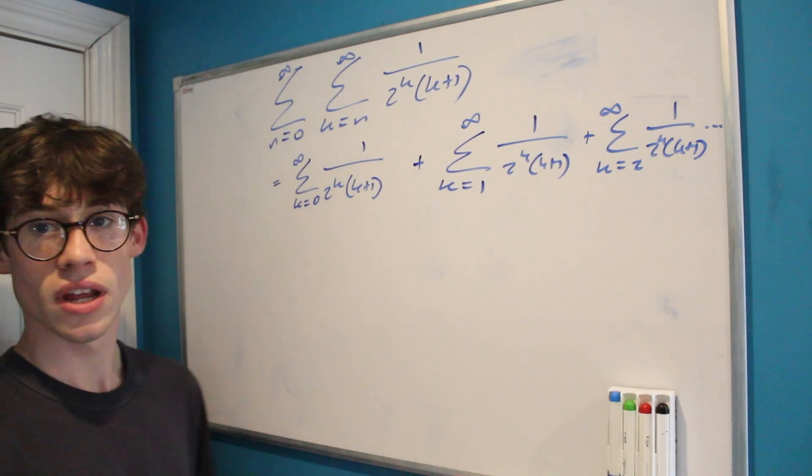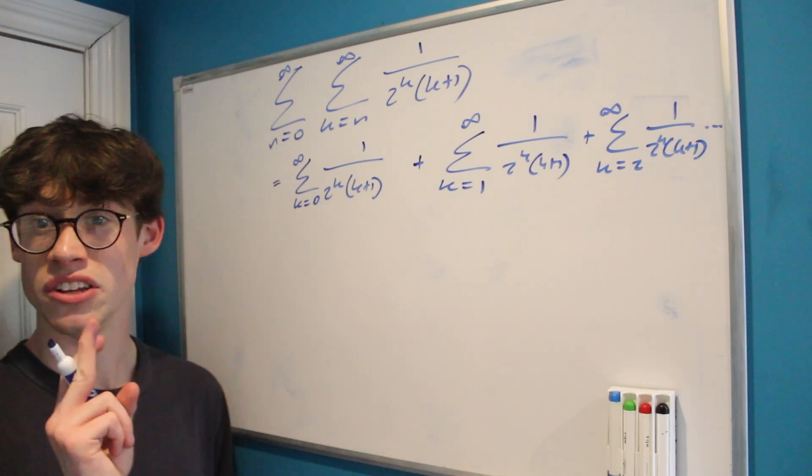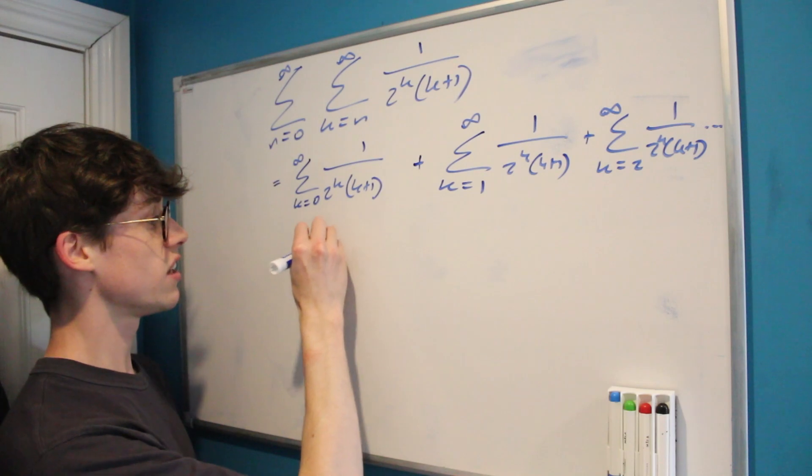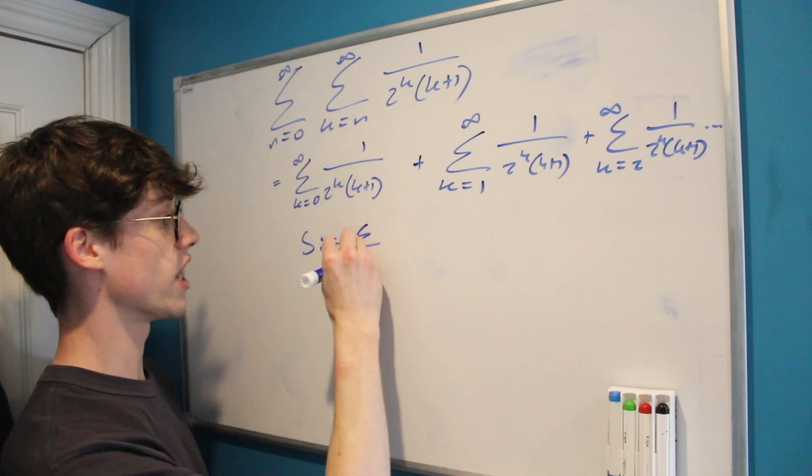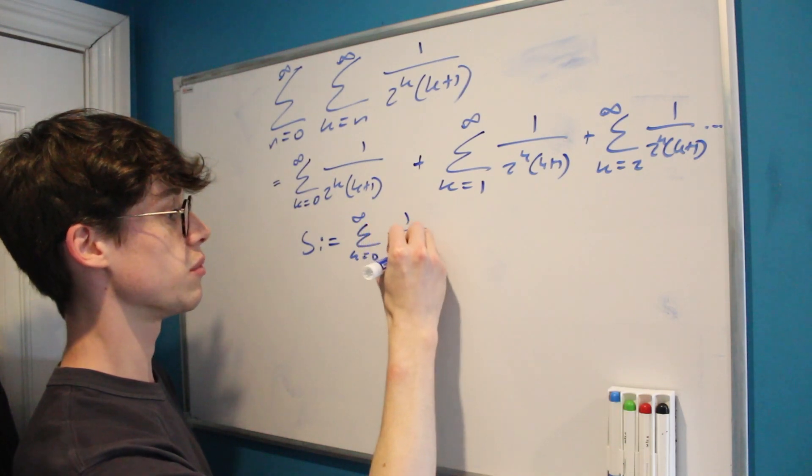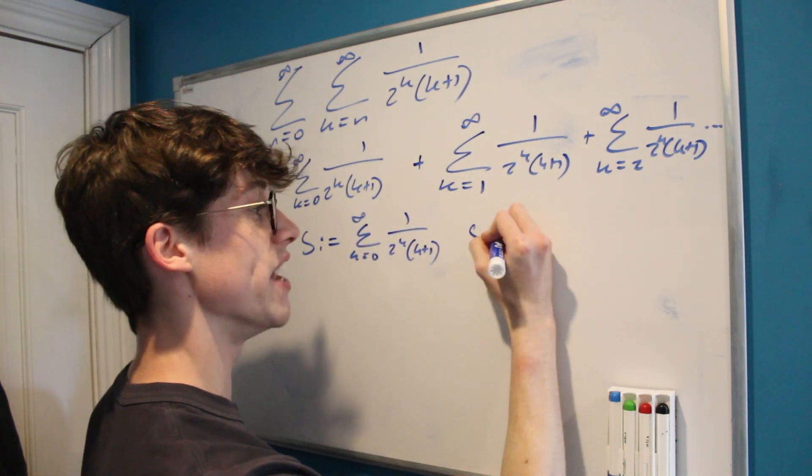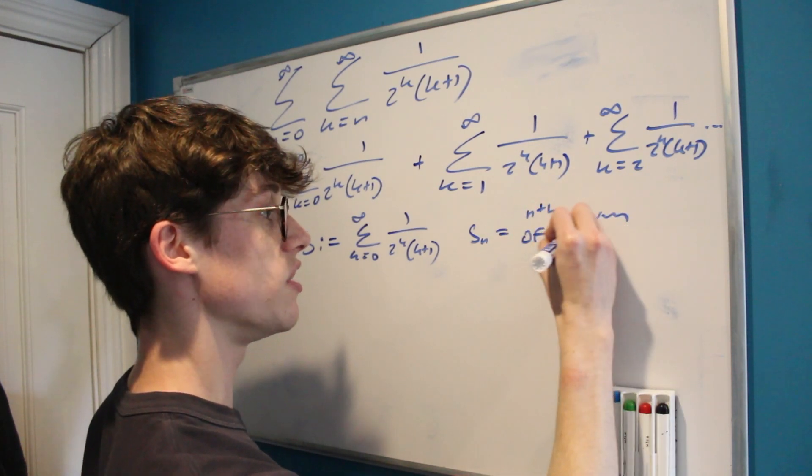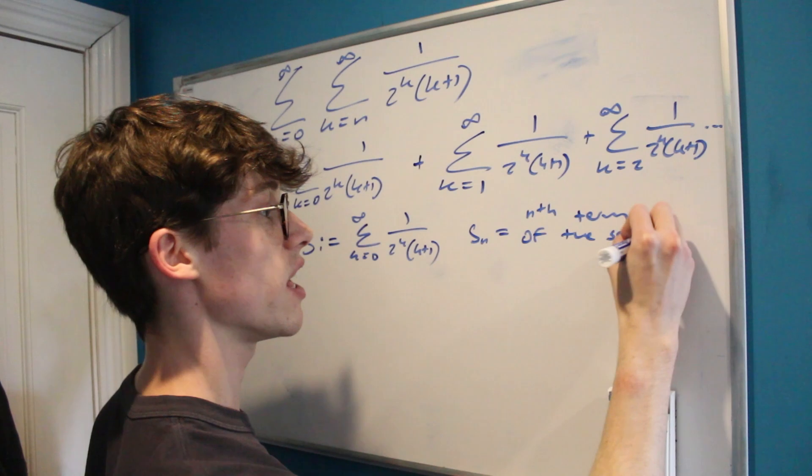So we've got to think of a way to process this information, and what I'm going to do is define two things I think are going to help us do that. I'm going to say that s is equal to the sum that we're looking at, the sum from 0 to infinity of 1 over 2 to the k times k plus 1, and I'm going to say that s of n is equal to the nth term of the series s.